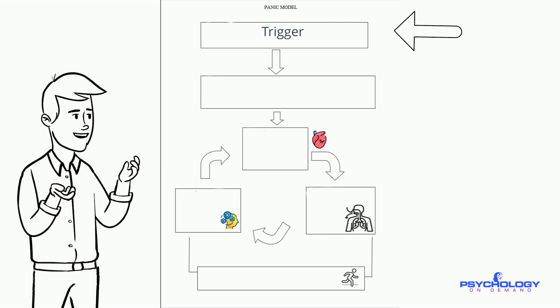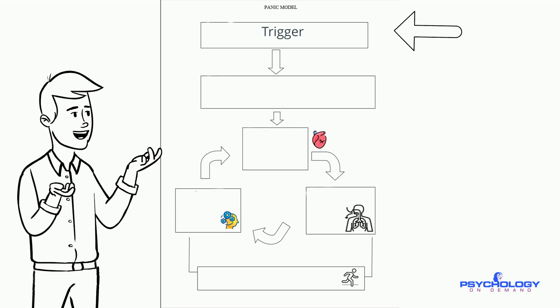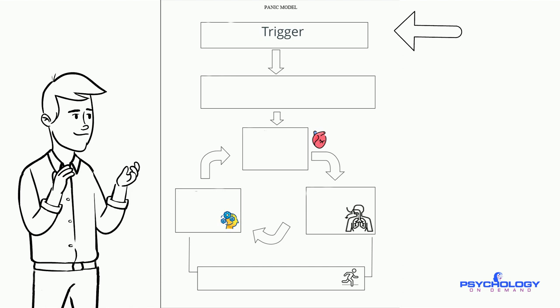His model suggests that panic attacks are triggered by either internal or external cues. For instance, the heart racing from running up the stairs could be a trigger, as well as getting some frightening news.